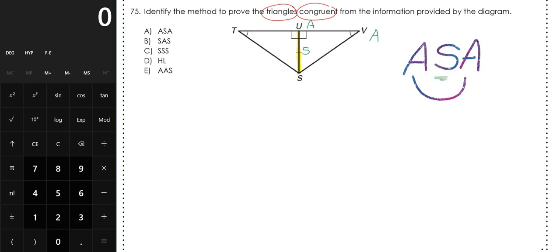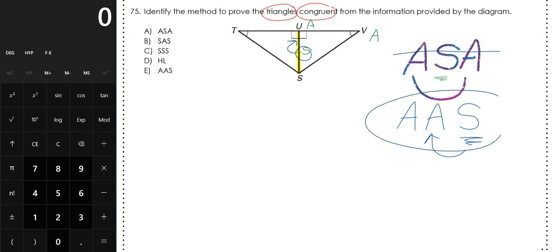We have another theorem that uses two pairs of angles and a side: AAS. AAS says the congruent side is only touching one of your angles. The shared side is only touching the right angle — it's not touching angle V. So AAS works here, which is choice E.